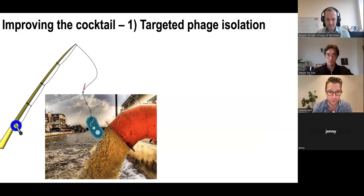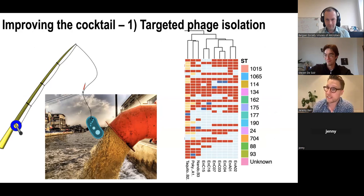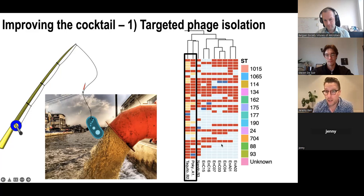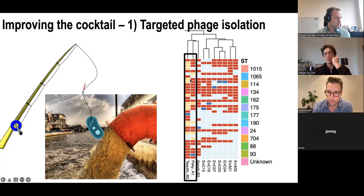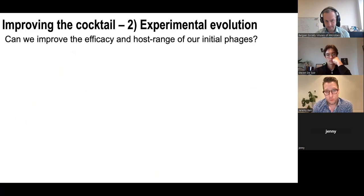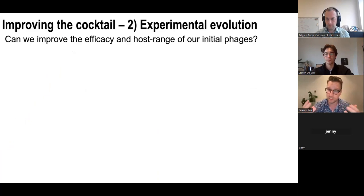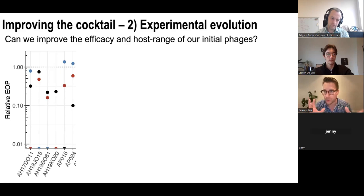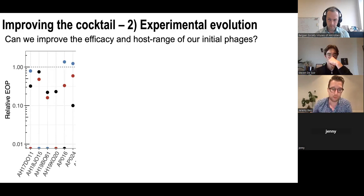We did two approaches. The first was targeted isolation — we fished in sewages just as Steven did, isolating novel phages against those problematic sequence types. We found two phages, Keto and Pocky, with good coverage against our low-coverage sequence types, broad host range, and strong lytic activity. The second approach was phage training — an experimental evolution approach to increase effectiveness of our original three-phage cocktail, since a number of phages had very low EOP on certain hosts.